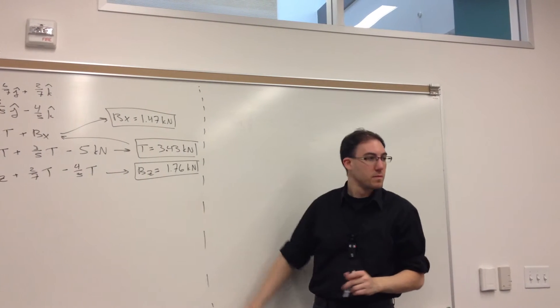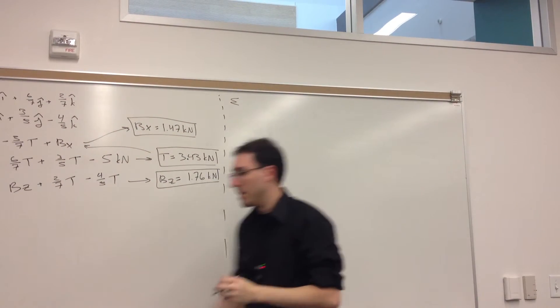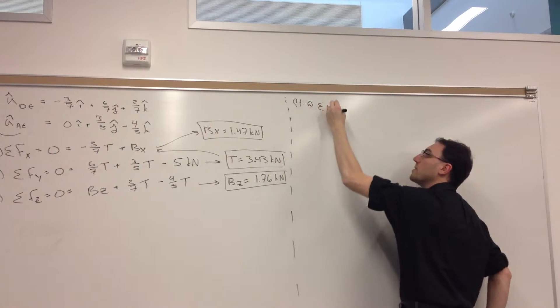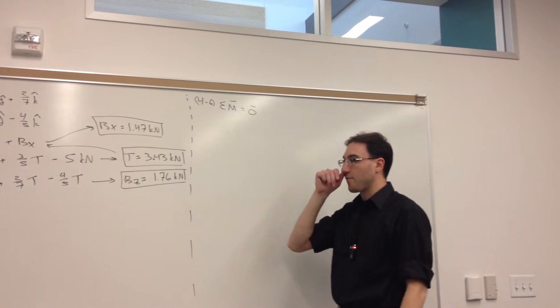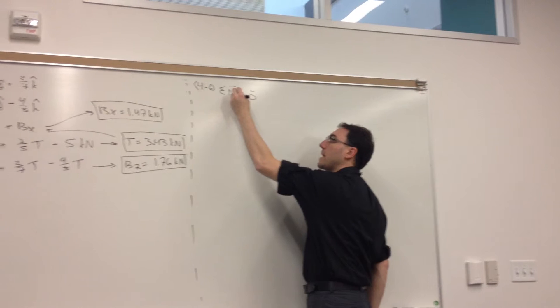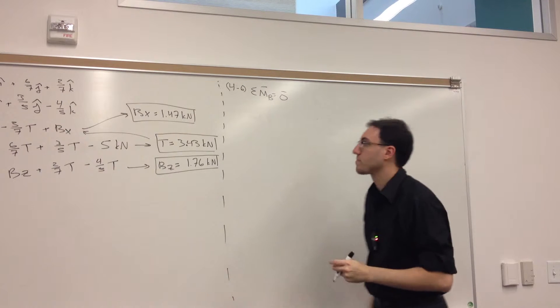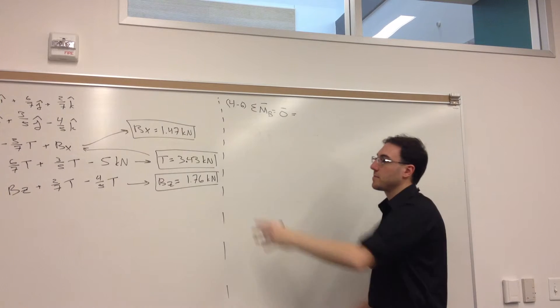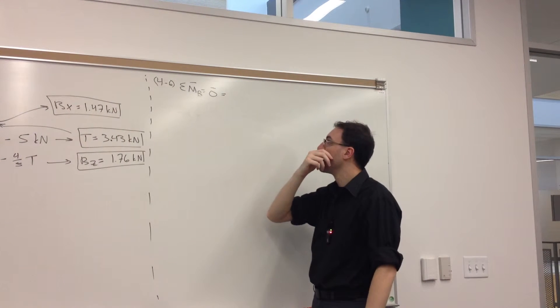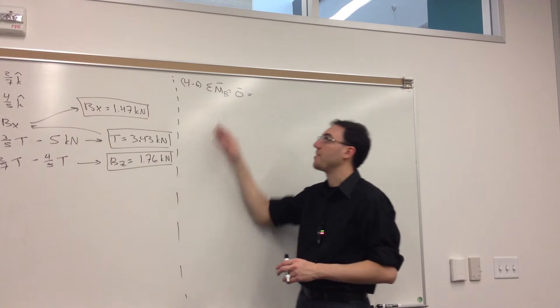All three of our forces we've figured out, so we just have the three moments remaining. Questions so far? So numerically this is going to turn out easier than the last example. We get our 4th through 6th equation by taking the sum of moments around a point equal to the zero vector. Looking at the free body diagram, what point should we take the moment about to make our lives simpler? I would say B. We have BX and BZ acting at it.